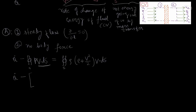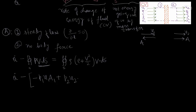Here V dot dS is a dot product. At point 1, U1 is in the right direction and area A1 is in the opposite direction, so it becomes minus P1·U1·A1. At the second point, velocity and area vector are both in the right direction, giving plus P2·U2·A. I have assumed A1 equal to A2 equal to A.